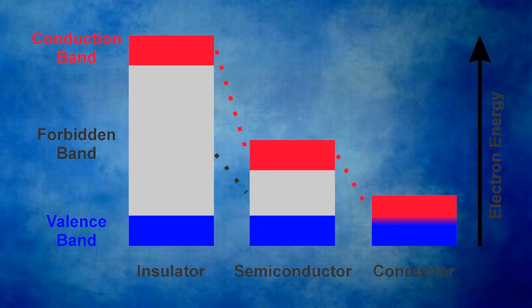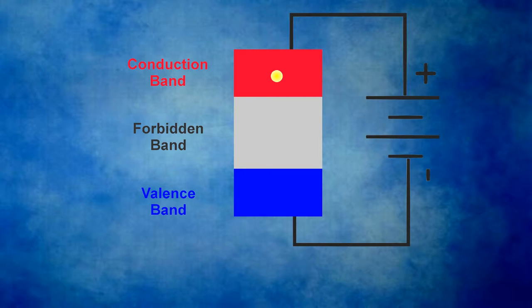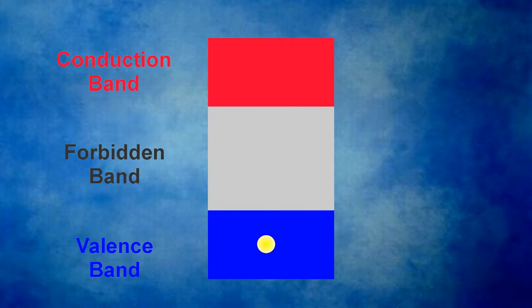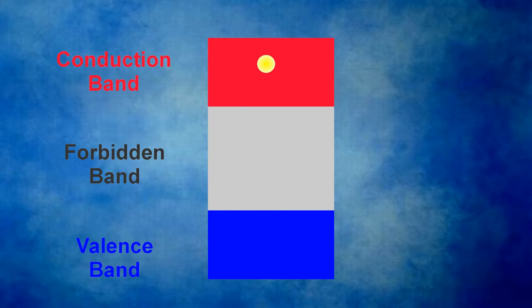There are other materials we call semiconductors that have a forbidden band, but it's fairly small, and therefore it is possible to excite electrons out of the valence band into the conduction band. When a photon is absorbed in material, the photon's energy is usually transferred to an electron. If this is not enough energy to excite the electron from the valence into the conduction band, that excess energy is released as heat. In some materials, even if the photon energy is enough to excite the electron into the conduction band, it quickly returns to the valence band, also giving off its energy as heat.